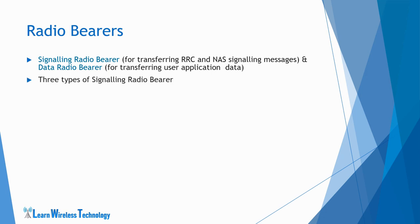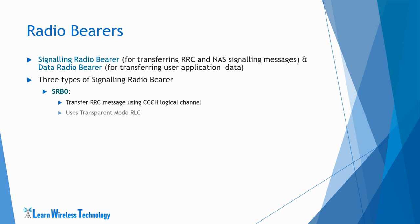The signaling radio bearers are of three types. The first is SRB0, which is used to transfer RRC messages using the CCCH logical channel. When the UE is attempting to establish an RRC connection, it does not have any signaling bearer established or any dedicated channel assigned. So the UE transfers the initial request message using the common control logical channel over SRB0. SRB0 uses transparent mode RLC.